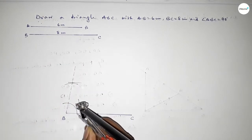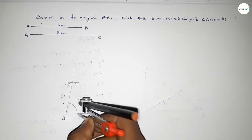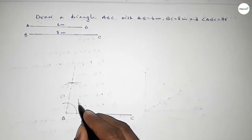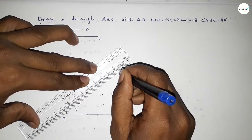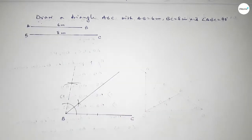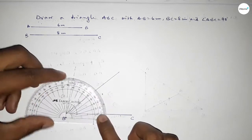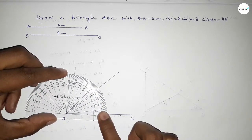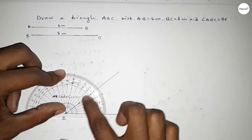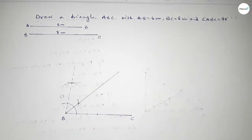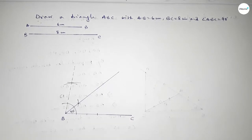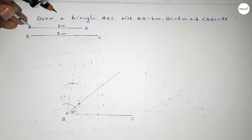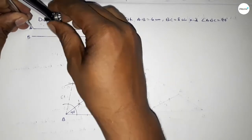Again with the same length, putting the compass here and cutting here. Both curves intersect at a point — now joining this to get 40 degrees. Checking whether it is 40 or not — this is perfectly 40 degrees.